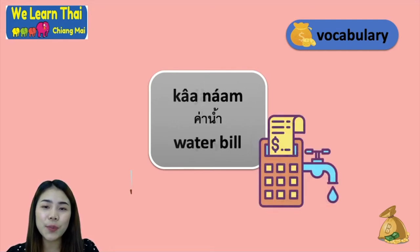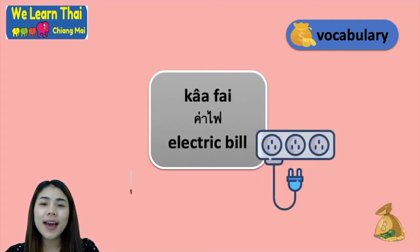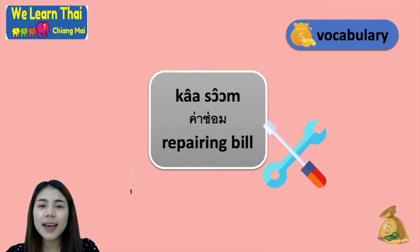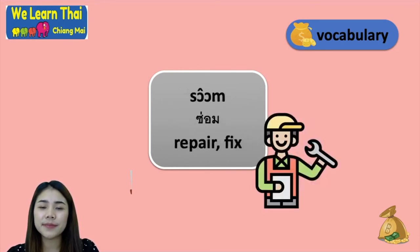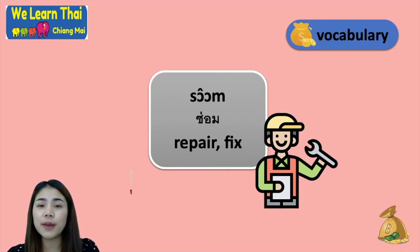Next: ค่าน้ำ means water bill, ค่าไฟ means electric bill, and ค่าซ่อม means repairing bill. ซ่อม means to fix or repair. For example, you can say ซ่อมมอเตอร์ไซ to mean you repair your motorbike, or ซ่อมโทรศัพท์ to repair your phone.